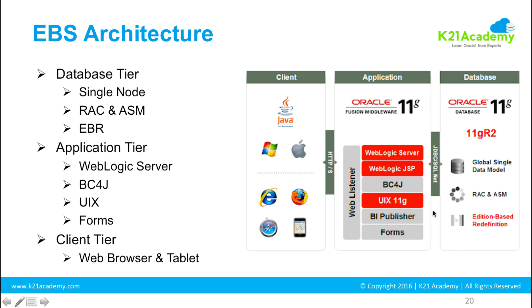To recap: the database tier has a single-node or RAC database with ASM, and in both cases edition-based redefinition is present. The application tier has WebLogic Server, BC4J, UIX, and Forms. The application tier connects to the database using either JDBC (Java Database Connectivity) or SQL*Net. The client tier connects to the application tier via the web listener using HTTP or HTTPS, from a web browser, tablet, or mobile device.